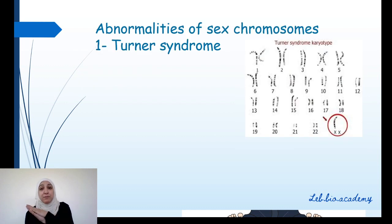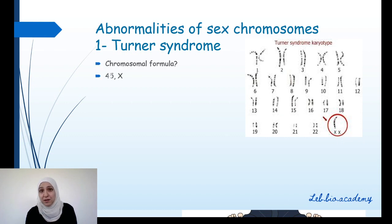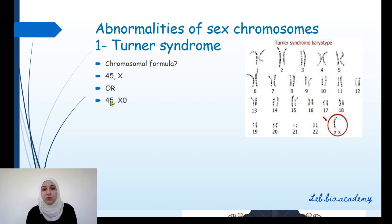Now let's talk about abnormalities of sex chromosomes. The first is Turner syndrome, where one X chromosome is missing — monosomy X. For the chromosomal formula: count all chromosomes, which is 45, write a comma, and then only one X. Do not write minus X. The formula is 45,X — or you can write 45,X0, meaning the other X is missing.